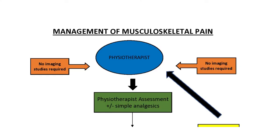This algorithm is called the management of musculoskeletal pain — it covers any pain of musculoskeletal source. The pathway begins with an initial physiotherapy assessment, shown in blue, where the physiotherapist performs an assessment and determines if there is any treatment required.